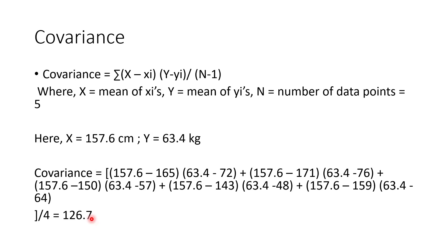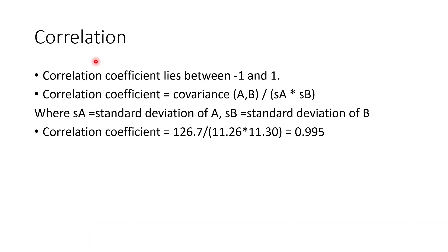A good thing to note is that covariance can lie anywhere between minus infinity and infinity. Apart from its sign, the value itself doesn't indicate the strength of association very clearly because it can be any magnitude. To standardize this value, there is something known as the correlation coefficient, which lies between minus one and one.